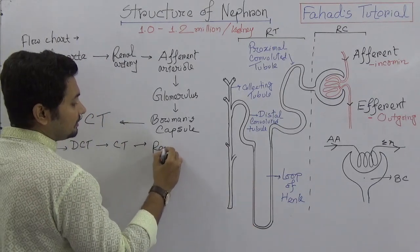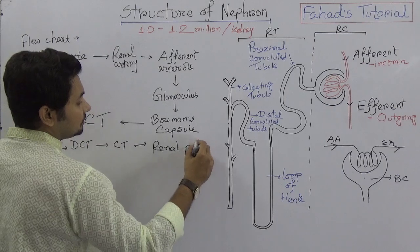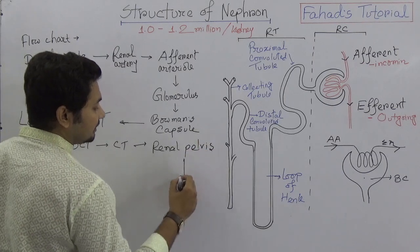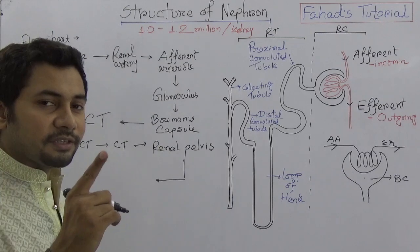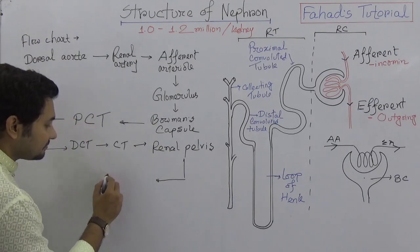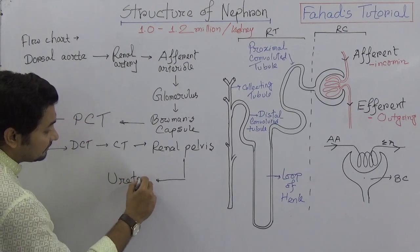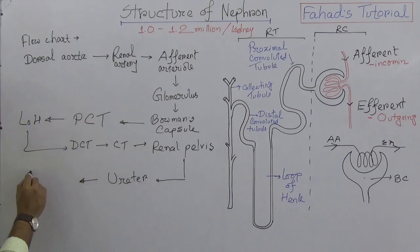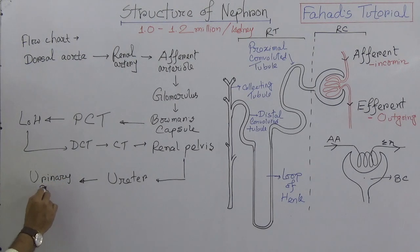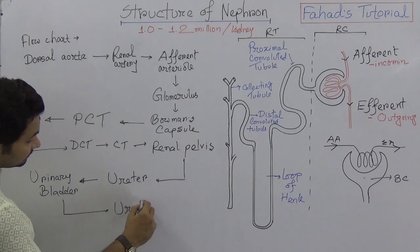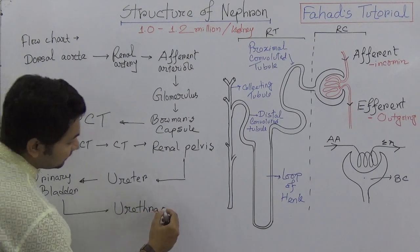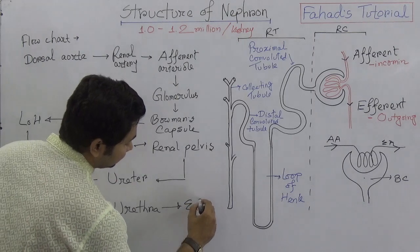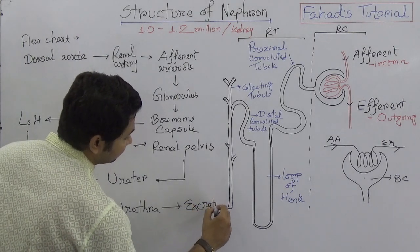Then all the collecting tubules head towards the renal pelvis. From the renal pelvis, it will go to the ureter. From the ureter, it will be stored in the urinary bladder. And from the urinary bladder, it will go to the urethra, and then excretion occurs.